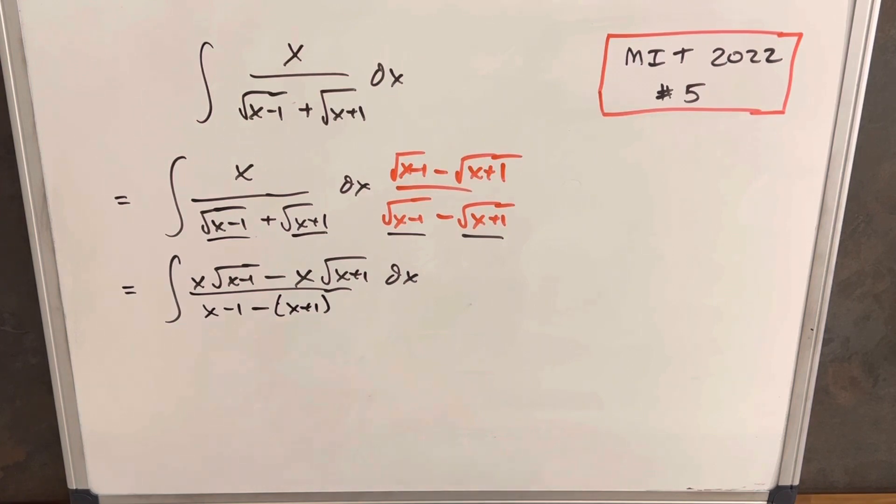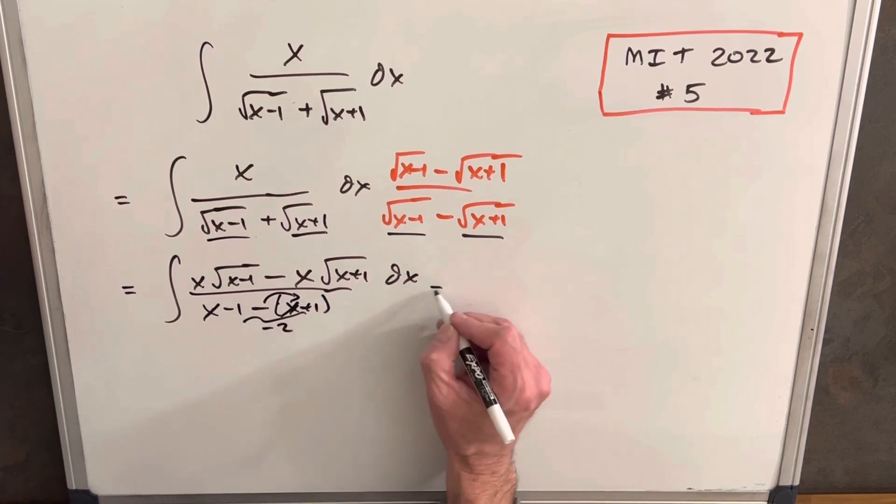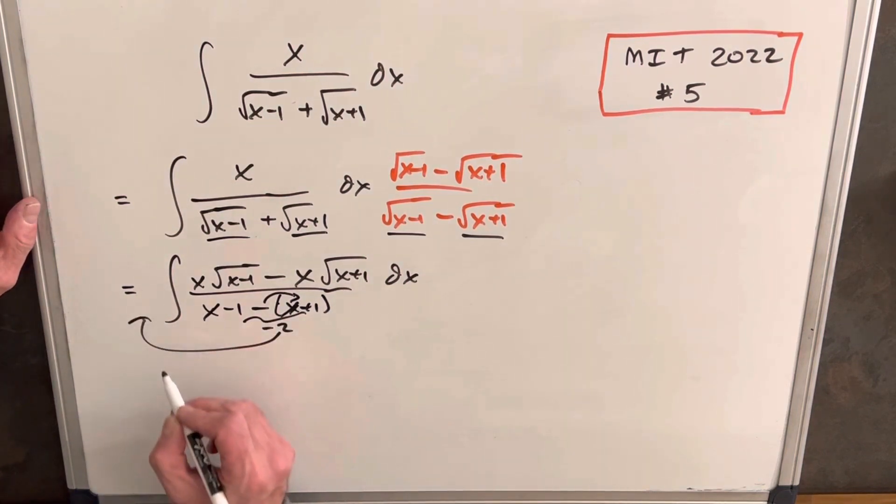Next, what I'll do is I'll bring out a rug so you guys don't hear me stomping around so much. Okay, then you'll notice that we have, if we distribute our minus sign, this x is going to cancel. I'm just going to have a minus 2 here. So then we're just going to take this minus 2 out front here, and we're going to have it as a minus 1 half.